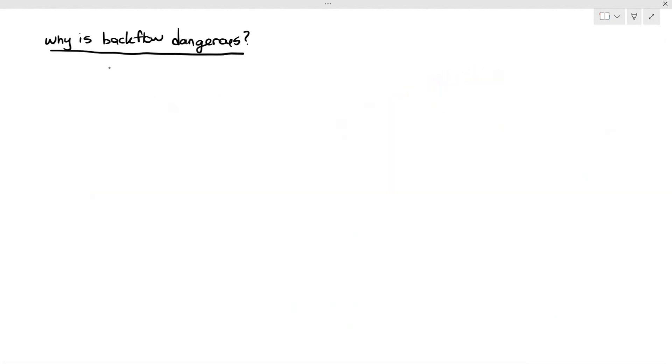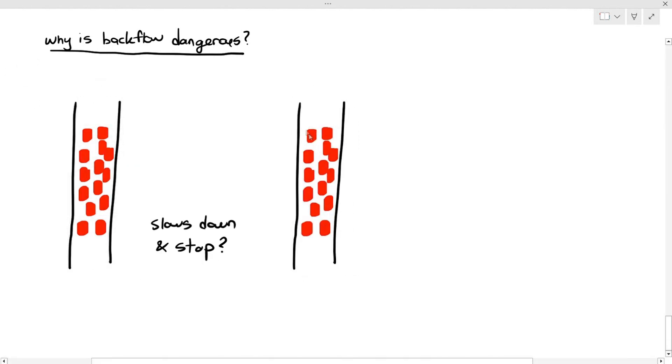That's basically it. So, why is backflow dangerous? This is just an extra bit of information. You don't need to know this for the exam, but if the backflow of blood happens, it will cause the blood to slow down and stop. And when blood slows down and stops, the red blood cells will tend to congeal and group up together. And when they group together, they will form something known as blood clots. And this can be quite dangerous because this is a kind of semi-solid mass.